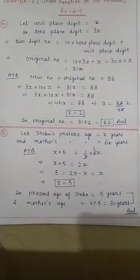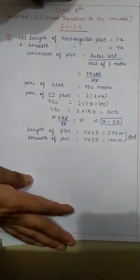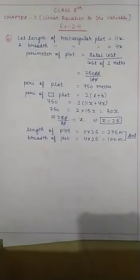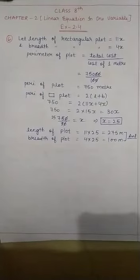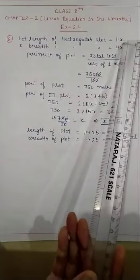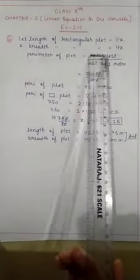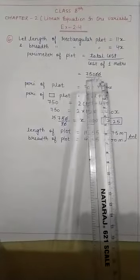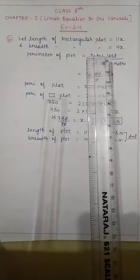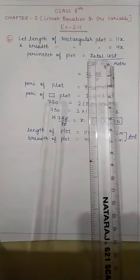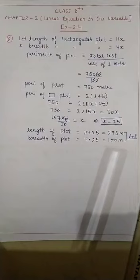Now I am going to question number 6. The question is: There is a narrow rectangular plot reserved for a school in Mahuli village. The length and breadth of the plot are in the ratio 11:4. Let the length of the rectangular plot be 11x and the breadth be 4x.